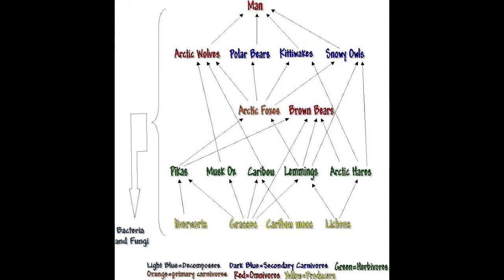This is an example of an arctic tundra food web. One example of a food chain seen here is that of the lichen. Lichens are producers and photosynthesize and are eaten by lemmings, which are eaten by arctic foxes, which are eaten by arctic wolves, which are hunted and perhaps eaten by humans. All of these organisms die and are broken down by bacteria and fungi.